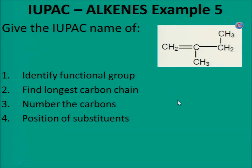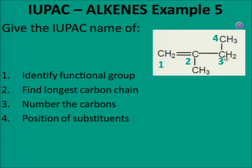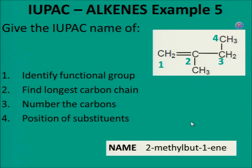Example 5. Give the IUPAC name of this molecule. Identify the functional group — there is a double bond, therefore it is an alkene. Find the longest carbon chain: counting gives 4 carbons as the longest chain. Number the carbons 1, 2, 3, 4. There is a substituent (methyl group) at carbon 2. The double bond is at carbon 1. So the name is 2-methylbut-1-ene.